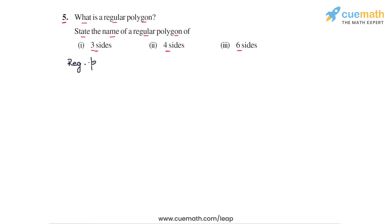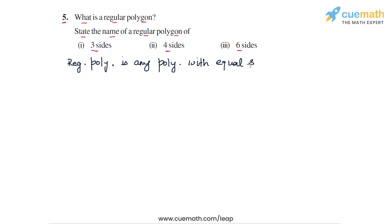A regular polygon is any polygon with equal sides — all the sides equal — and all the angles equal as well. Equal angles. This is the definition of a regular polygon.